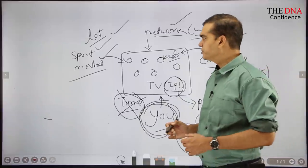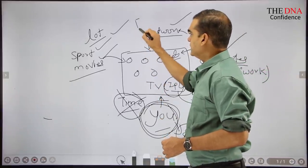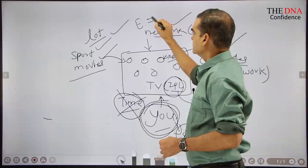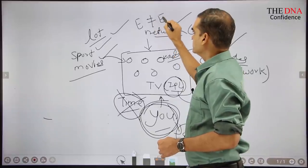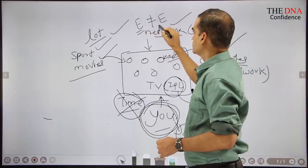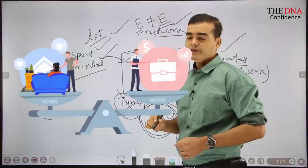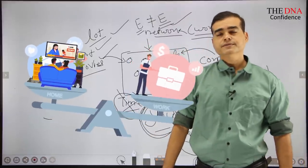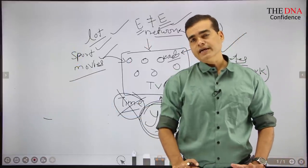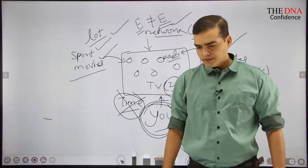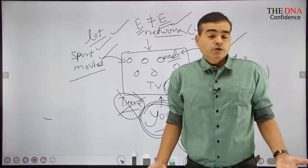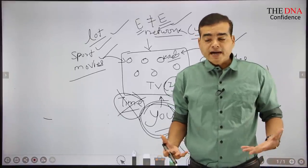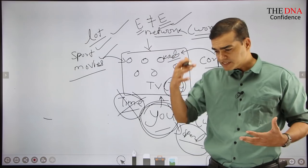What I want to tell is this. If your equation between E and E is gone wrong, E and E means if entertainment and education is not balanced properly, you are going to suffer. That is for sure. Many people are doing that, many people are suffering. I also have gone through this. During those days IPL was not there.